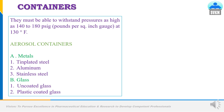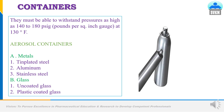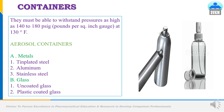Containers used in aerosols must be able to withstand pressures as high as 140 to 180 psig — that is pounds per square inch gauge — at 130 degrees Fahrenheit. Aerosol containers are made up of two types: metal or glass containers. Metal containers are again of three types: tin-plated steel containers, aluminium, and stainless steel containers. Glass containers include uncoated glass and plastic-coated glass containers.